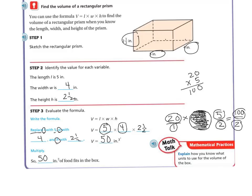So 50 inches cubed. Make sure you get that cubed because we're doing 3 dimensions now. 1, 2, 3. When we did area we only did 2 dimensions. So the answer is 50 inches cubed of food is going to fit in the box.